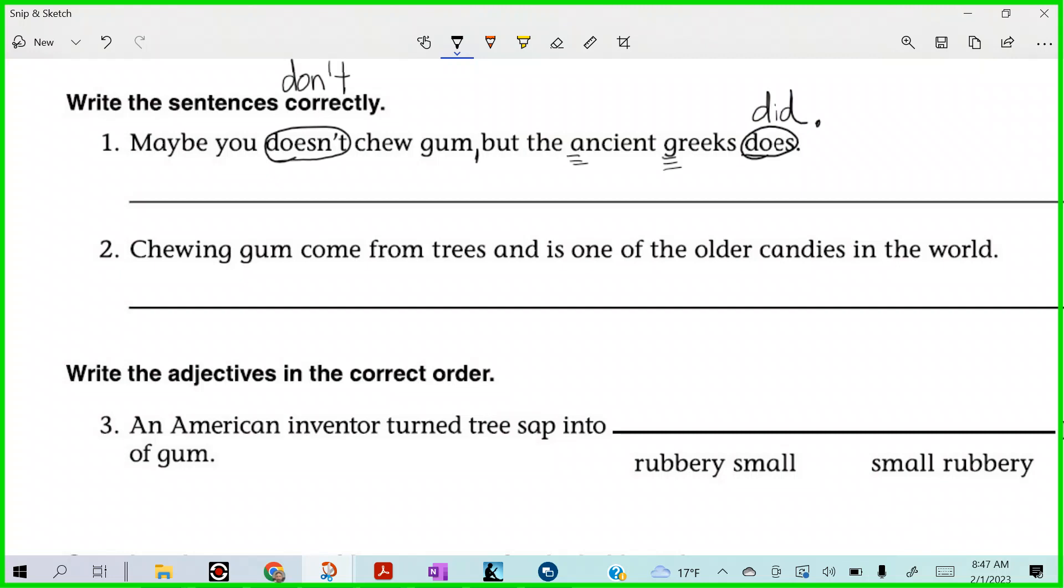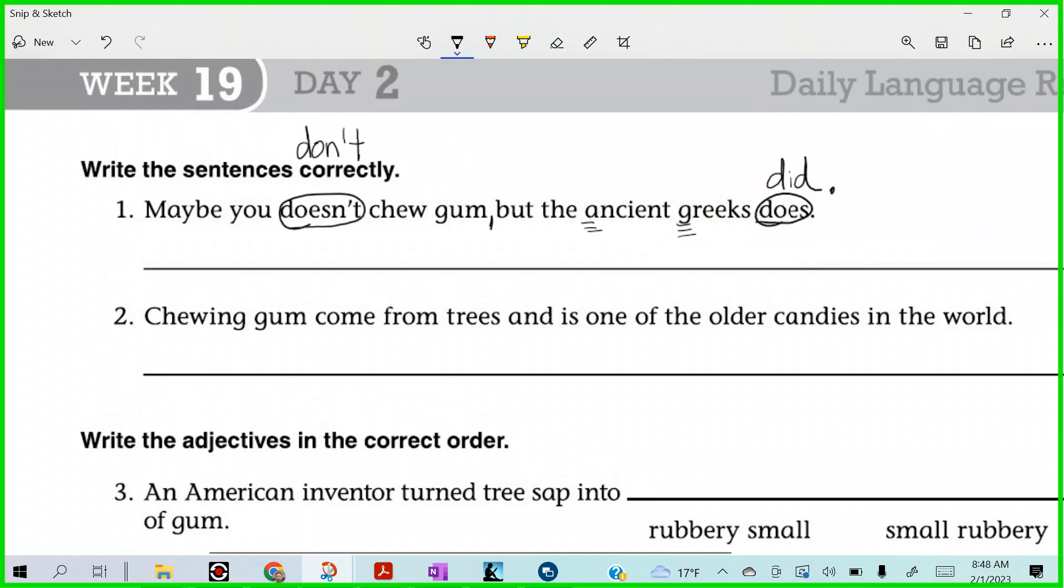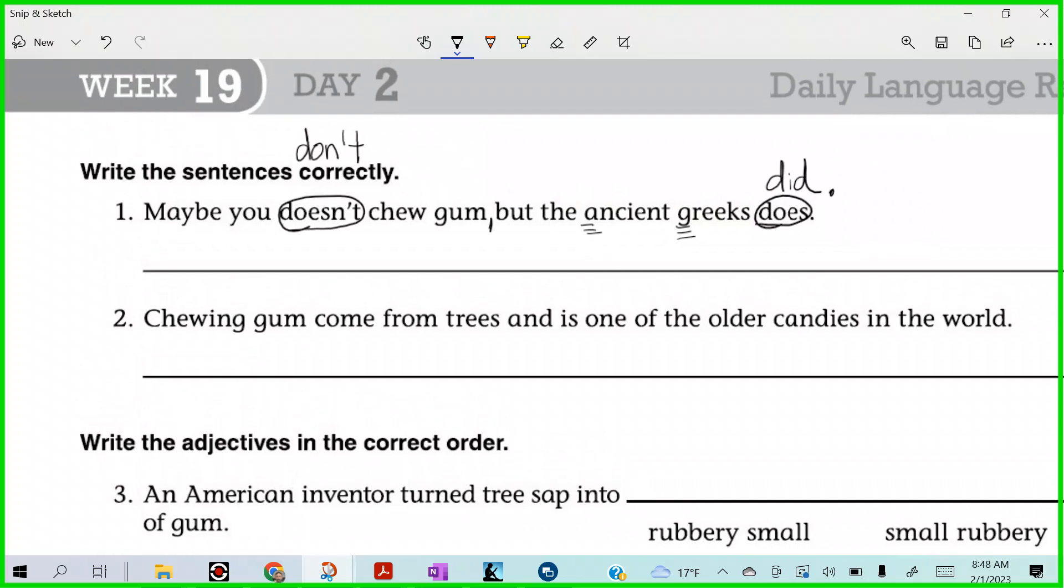What do you think? That sounds probably pretty good. Yep. I don't see anything else, you guys. Maybe you don't chew gum, but the ancient Greeks did. Yeah. So, what's our credo? We read. Edit. Write. Edit. And we write. All right. So, did we write this out nice and neat? We have one, two, three, four, five. Five corrections for that one. All right.